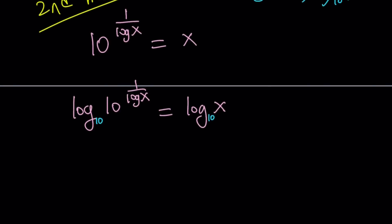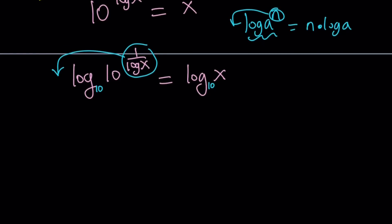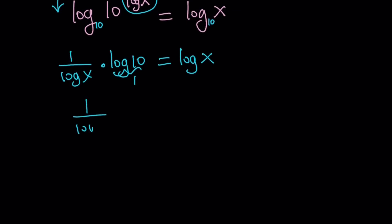We have with logs this power property. If you have log of a to the n, n can be moved n times log a. And these properties can easily be proven if you set this equal to some variable y and then use the definition of logarithms. They're kind of fun to do because if you are going to be doing proofs this is a good way to start. So go ahead and move the 1 over log x to the front because that is the exponent for 10. So 1 over log x multiply by log 10. I'm not going to write the base anymore because it's annoying. And then this is log x.